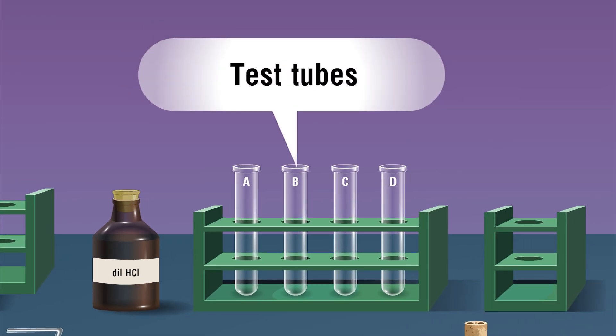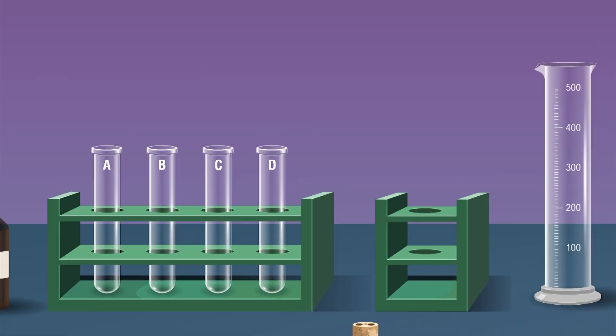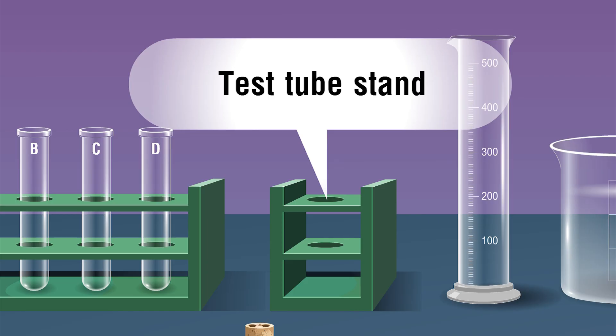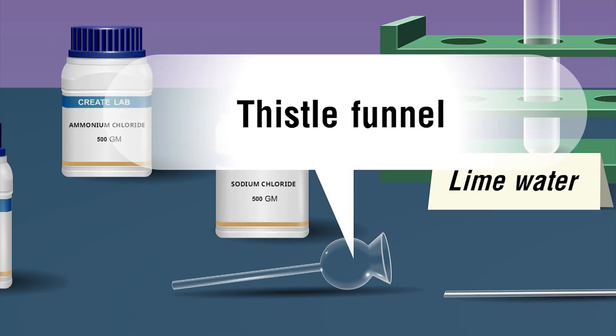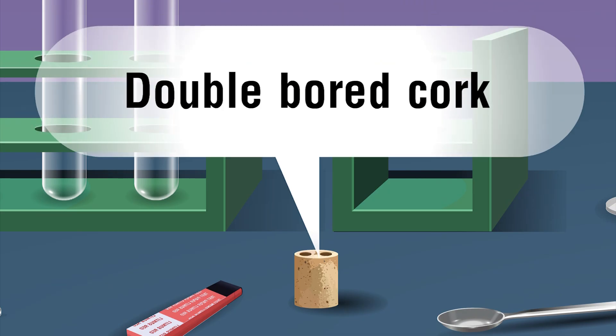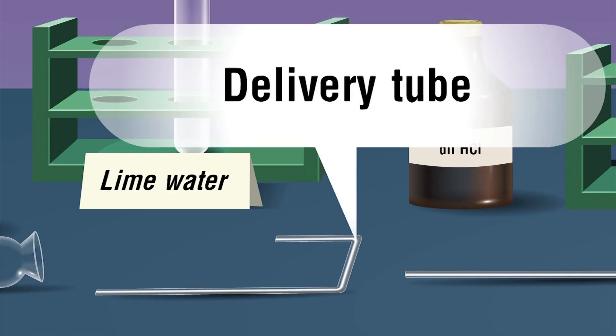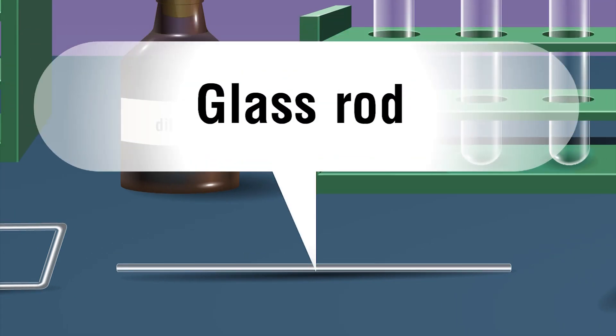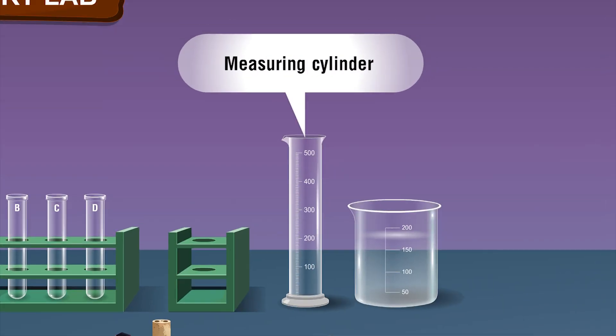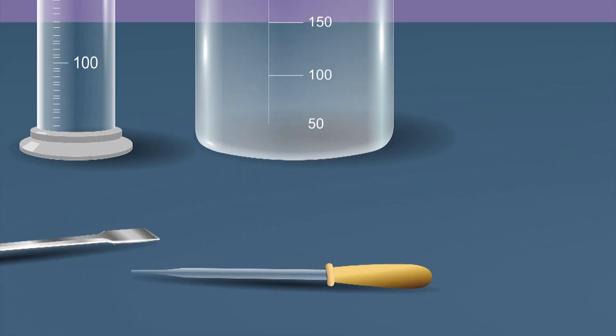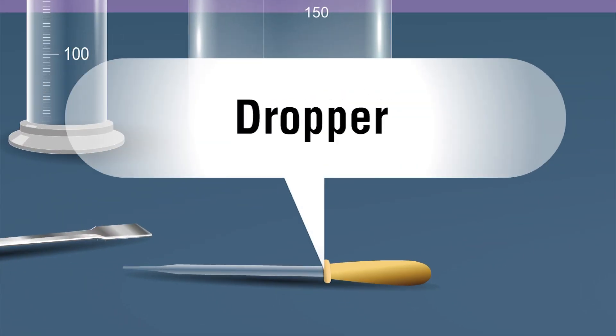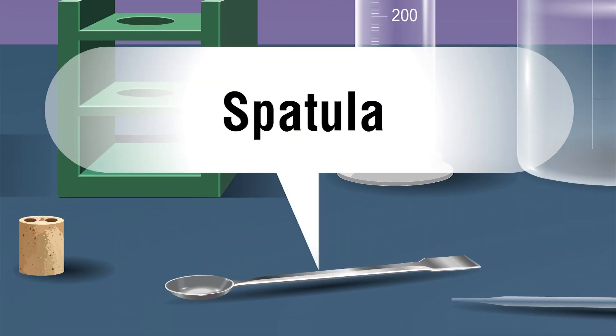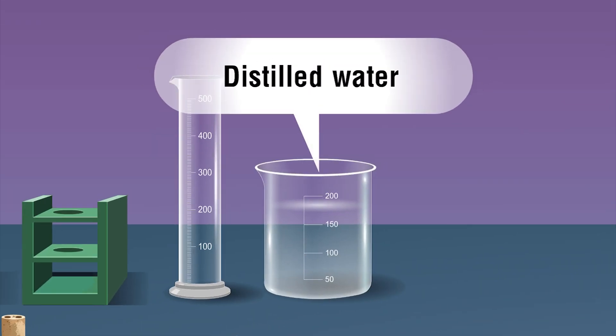Additional equipment includes test tubes, test tube stand, a thistle funnel, a double bored cork, a delivery tube, a glass rod, measuring cylinder, dropper, spatula, and distilled water.